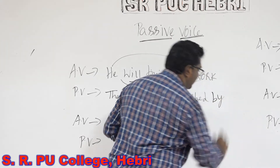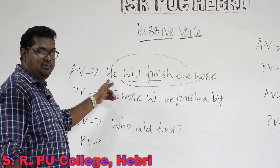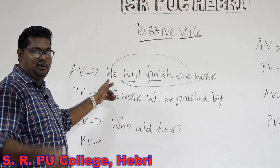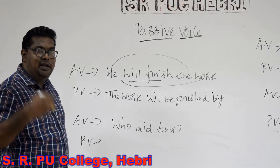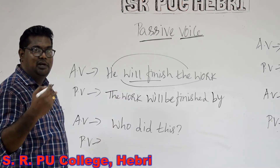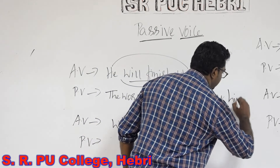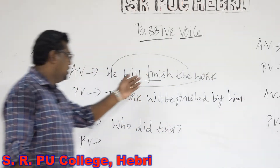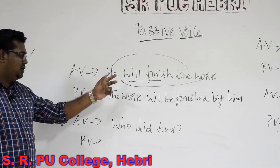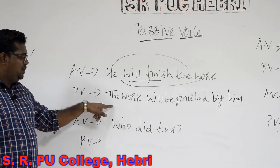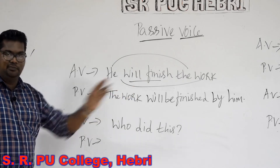And finally, the object in this case is 'he'. We cannot write 'he' as it is, so we need to write the correct form of the pronoun 'he', that is 'him'. So this is how we can change the sentence 'He will finish the work' from active voice to passive voice — that will be 'The work will be finished by him'.